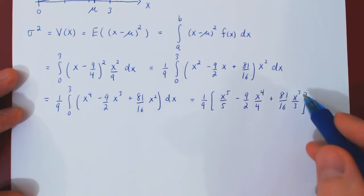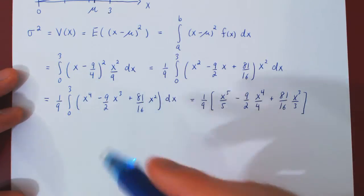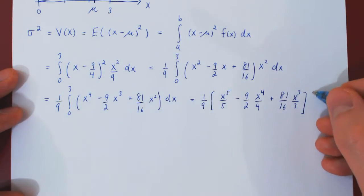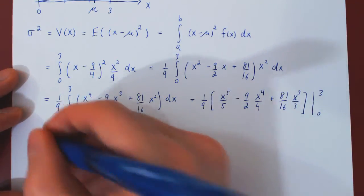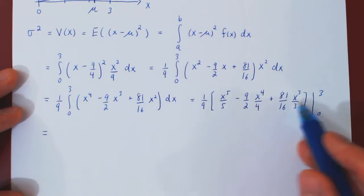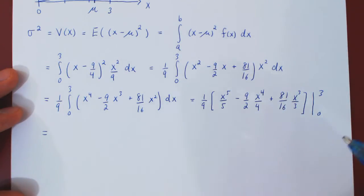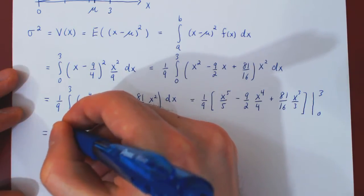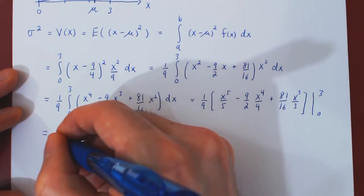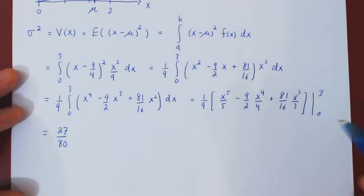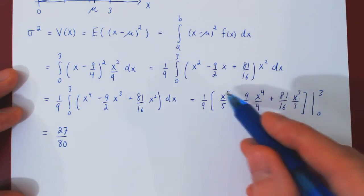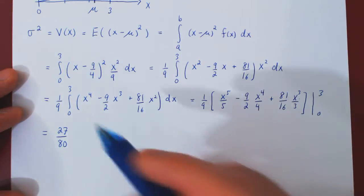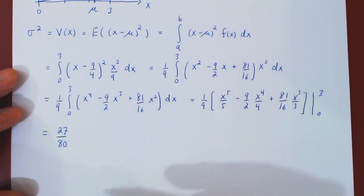This is nothing but the antiderivative of the function, which we now must evaluate from 0 to 3. So, if you plug in x equals 3, after some simplification, you will arrive at 27 over 80. And I will leave that up to you, minus the function at 0, which is obviously equal to 0. So, all we have is the variance is exactly 27 over 80.